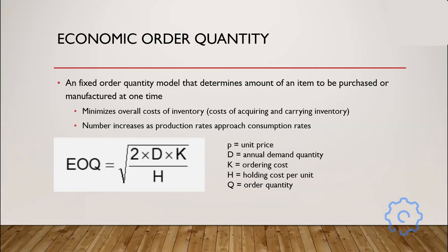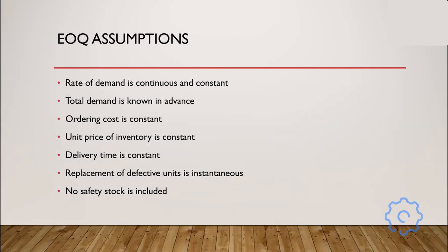Here is the basic equation for EOQ. We have D, which is the annual demand quantity; K, which is the ordering cost; and H, which is the holding cost. The assumptions are that the rate of demand is continuous and constant. All of the variables in this equation are linear — we don't assume any variability. There are equations that account for variability, but that is outside the scope of this class.